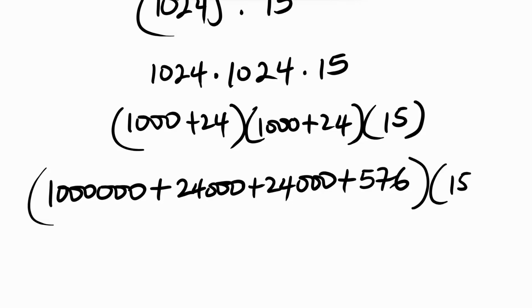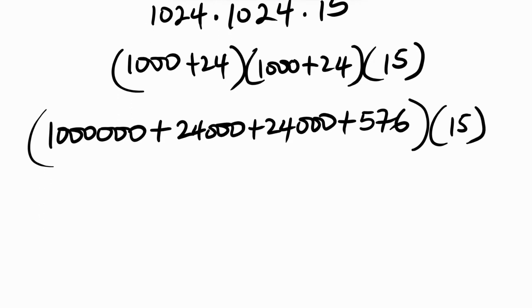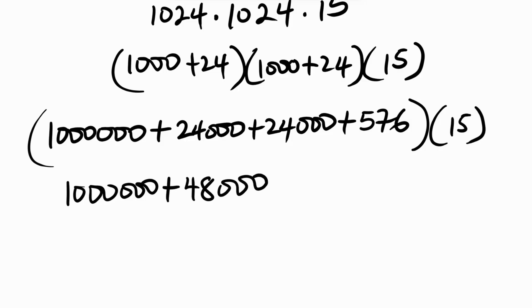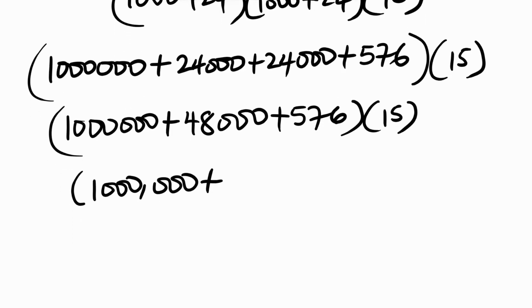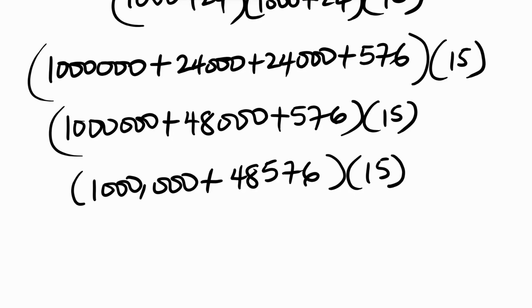So we have 1,000,000 plus 24,000 plus 24,000 plus 576, all times 15. Adding those together: 1,000,000 plus 48,000 plus 576 gives us 1,048,576.